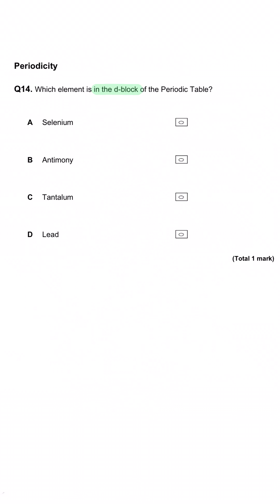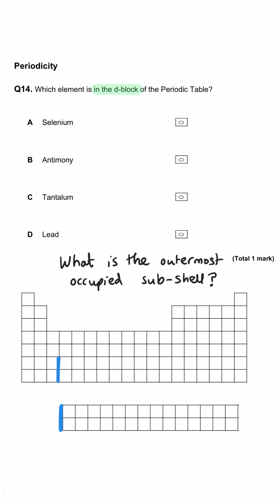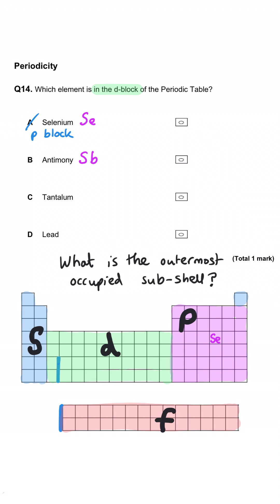Which element is in the D block of the periodic table? The blocks take their letter from the outer occupied subshell: group 1 and group 2 along with helium are S block; the right-hand side is P block; the middle of the periodic table is D block with outer electrons in a D subshell; and the lanthanides and actinides at the bottom are F block. Selenium is in group 6 — P block. Antimony is in group 5 — also P block. Tantalum is in the middle, so that is the D block element. Lead is also P block. So C is the correct answer.